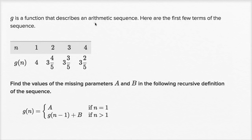G is a function that describes an arithmetic sequence. Here are the first few terms of the sequence. The first term is four, second term is three and four-fifths, third term is three and three-fifths, fourth term is three and two-fifths.